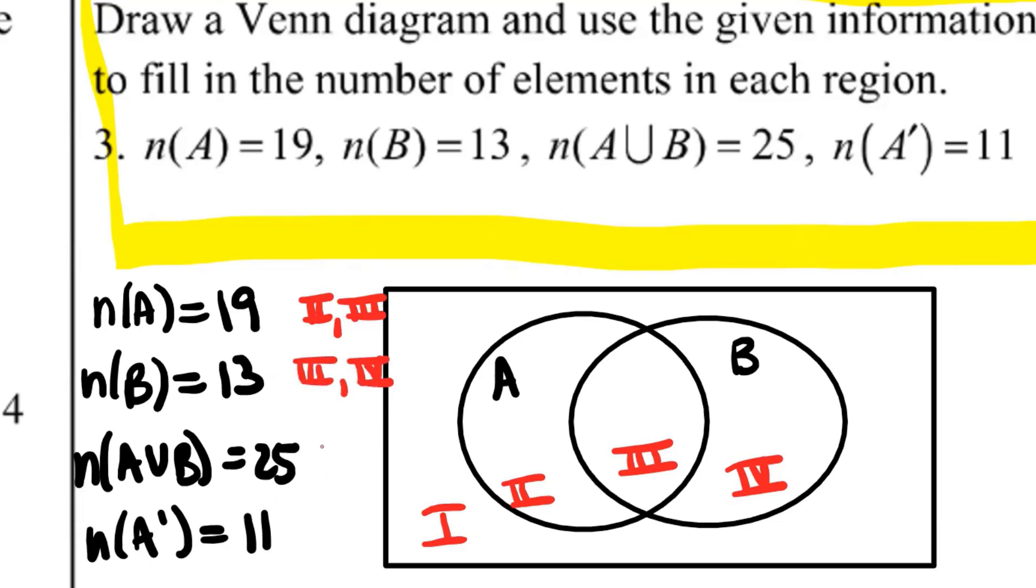A union B is which regions? Two, three and four. That's right. Because it's a union, so we're putting them together. And what about A complement? One and four.